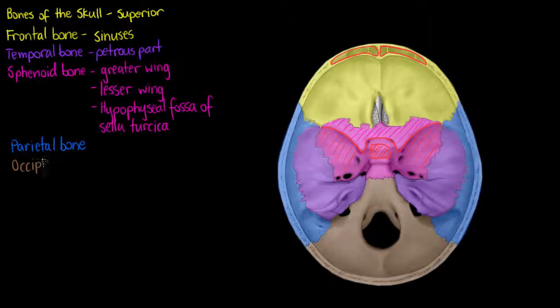Posterior to that we have our occipital bone. I'll just point out as well, now that we have the occipital bone, the sphenoid bone, and the temporal bone highlighted, if we look at the portion of the temporal bone that makes contact with our occipital bone and our sphenoid bone, that is what we refer to as the petrous part.